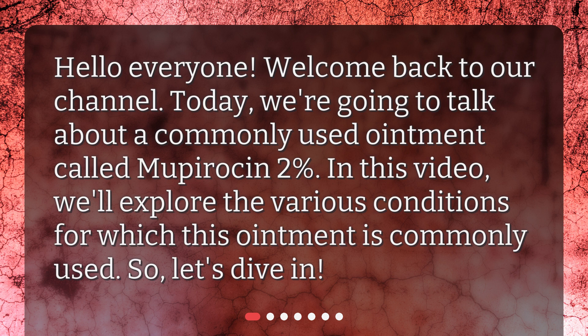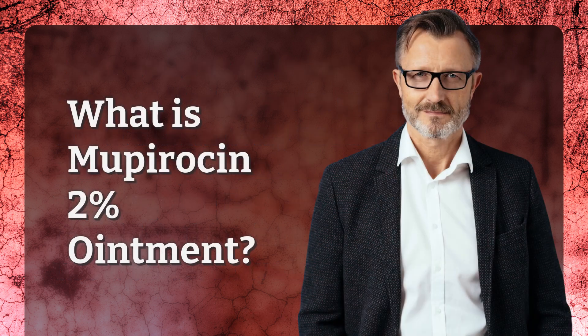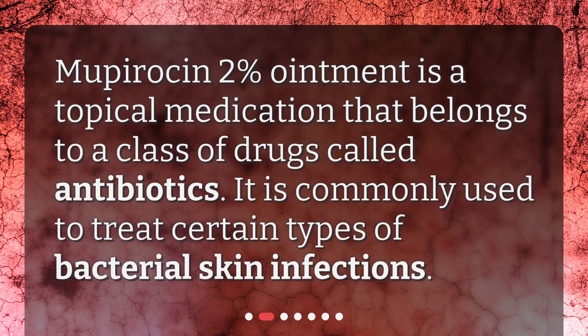In this video, we'll explore the various conditions for which this ointment is commonly used. So, let's dive in. Mupirocin 2% ointment is a topical medication that belongs to a class of drugs called antibiotics. It is commonly used to treat certain types of bacterial skin infections.